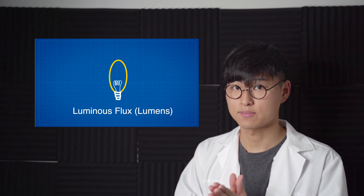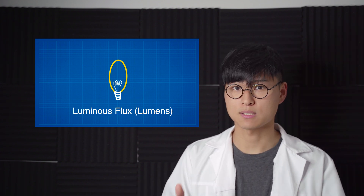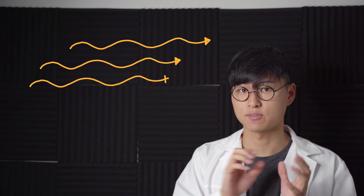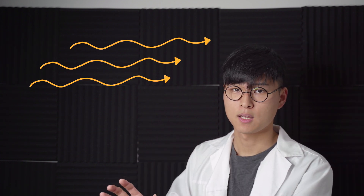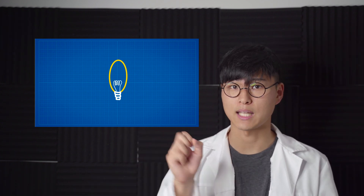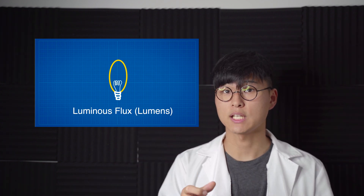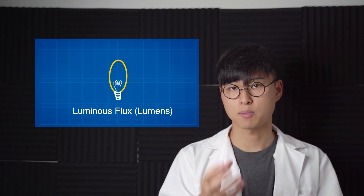When the bulb converts electrical energy into light energy, it creates what we call the luminous flux. Flux is just a term we use to describe the flow of things — in this case the flow of photons. In other words, luminous flux is the total amount of visible radiation the light bulb gives off, and it's measured in lumens. The higher the lumens, the more light it produces.